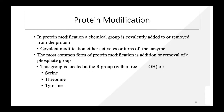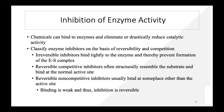Regarding protein modifications: a chemical group is covalently added to or removed from the protein. Covalent modifications either activate or turn off enzymes. The most common form is addition or removal of a phosphate group, located at the R group with a free hydroxyl group — for example on serine, threonine, or tyrosine residues.